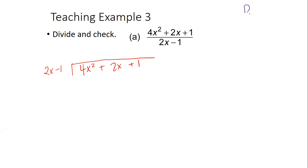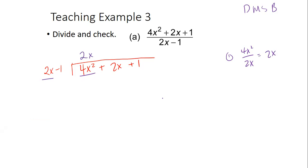We're going to follow divide, multiply, subtract, bring down. When you're dividing, you're dividing your leading terms only. So you're asking yourself: what is four X squared divided by two X? And I'm going to tell myself: two X. So that's the first part of my quotient. After you divide, then you're going to multiply — multiplying this part of your quotient times your divisor.